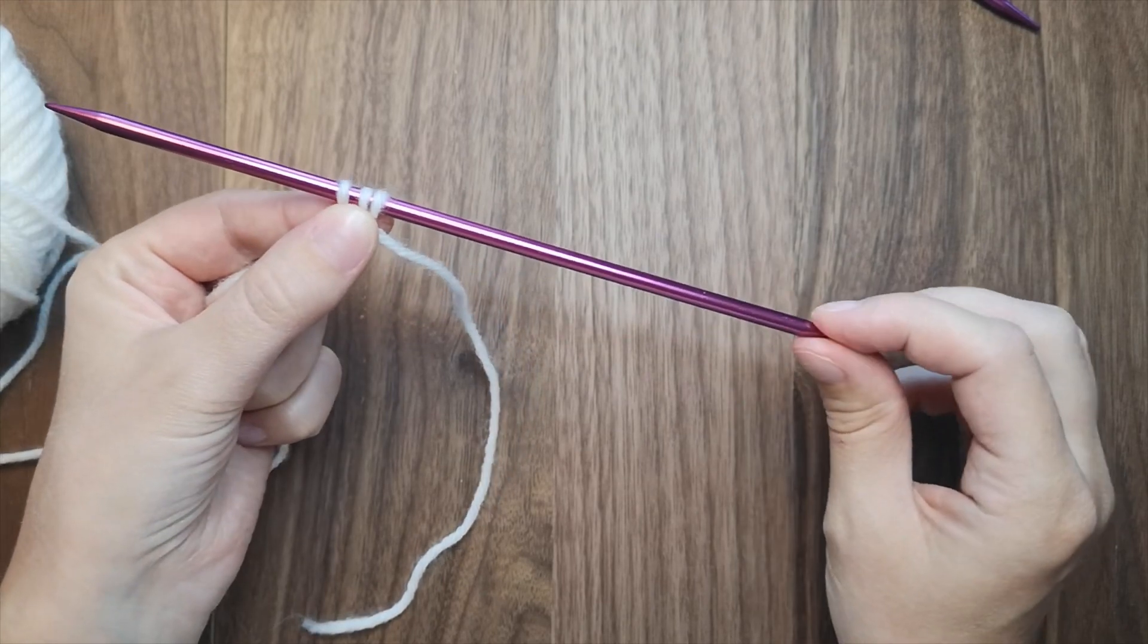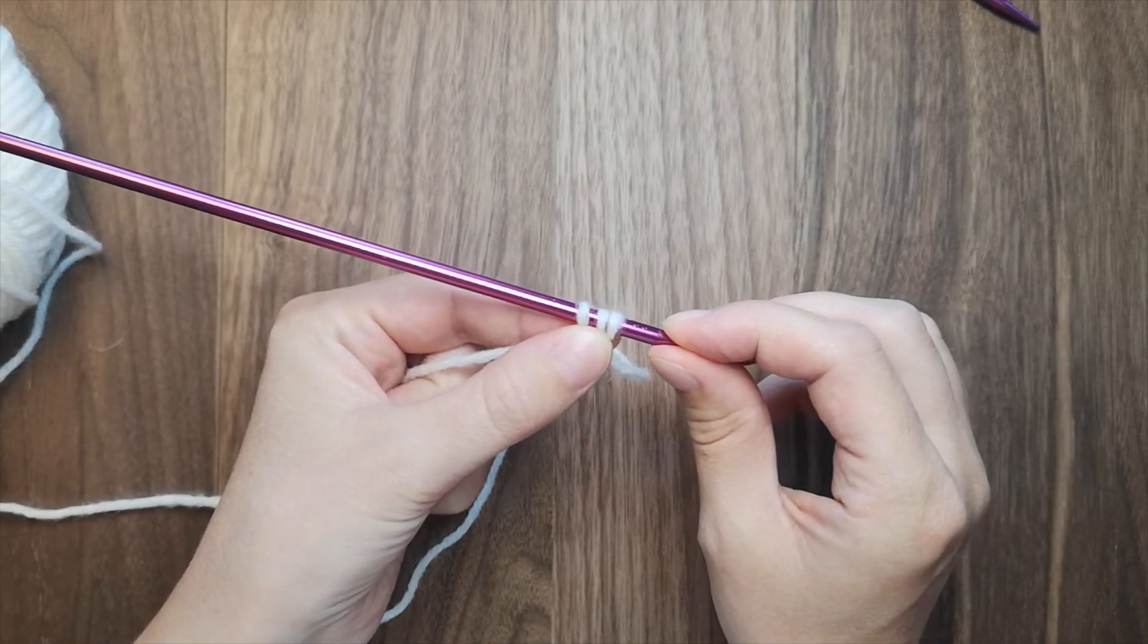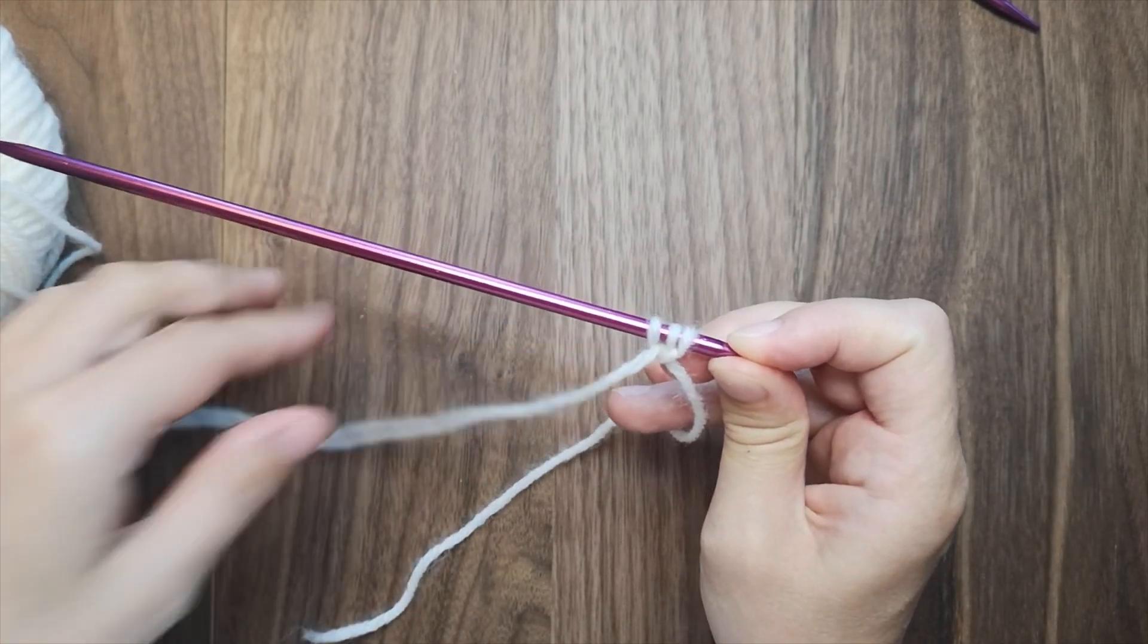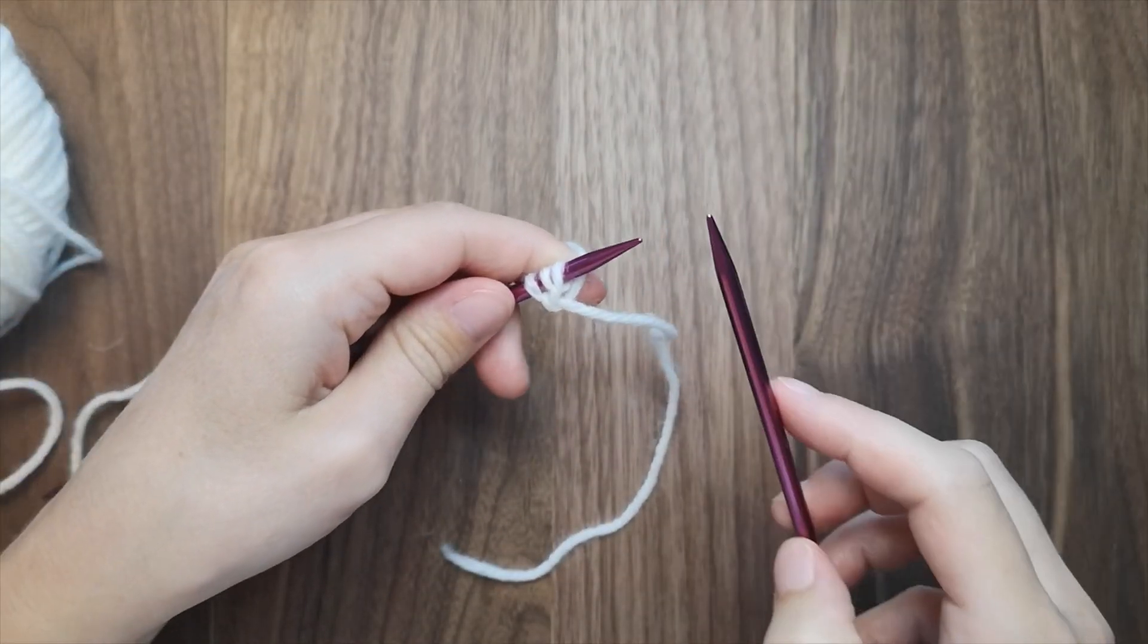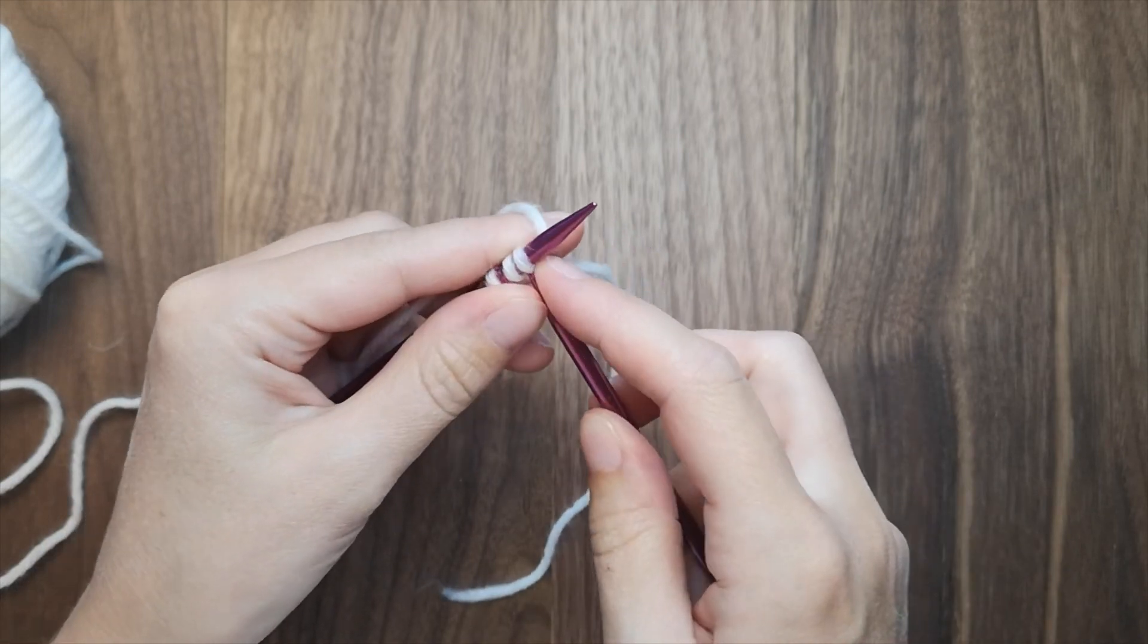With our working yarn on the left side of our work, we push our stitches to the right side of our needle, and then we knit the stitches.